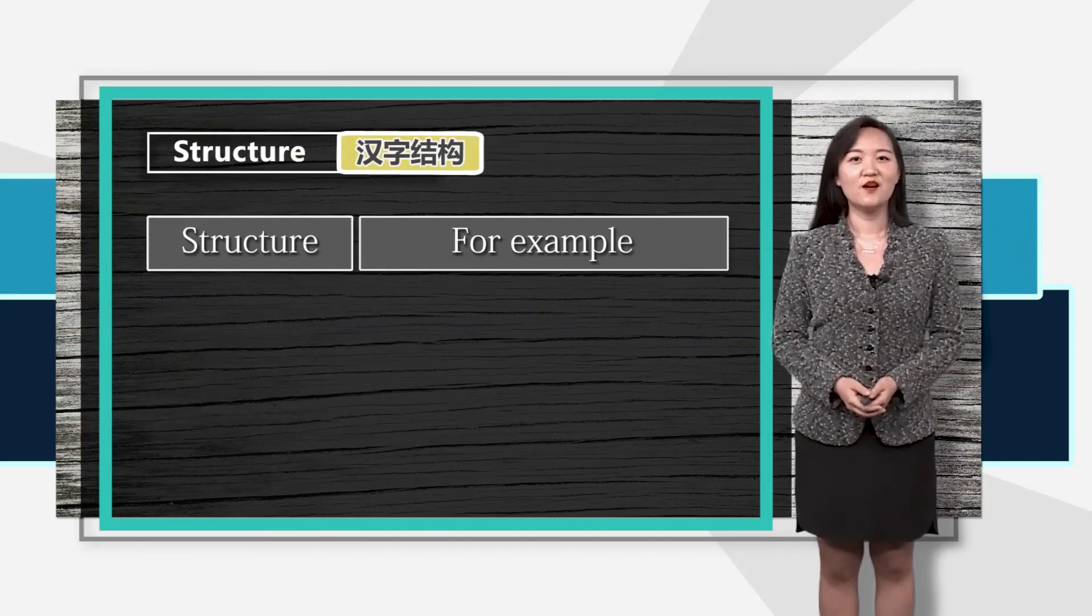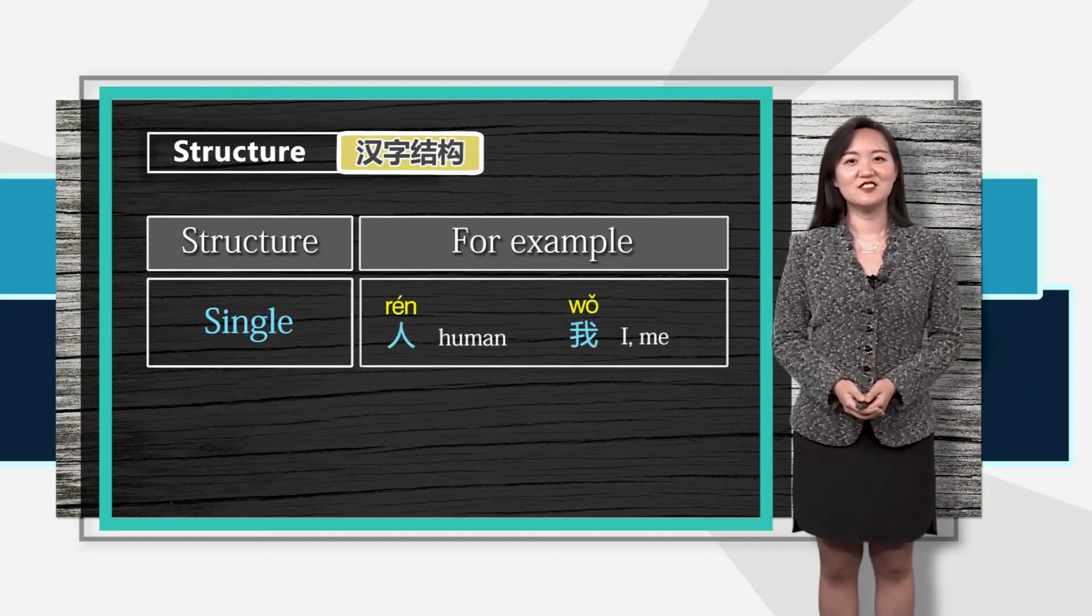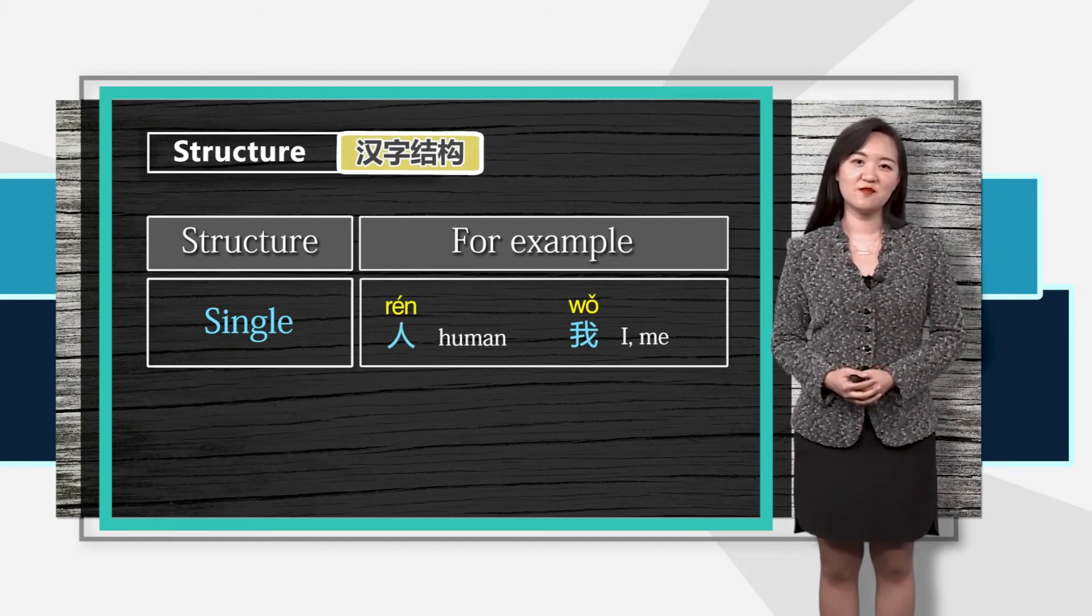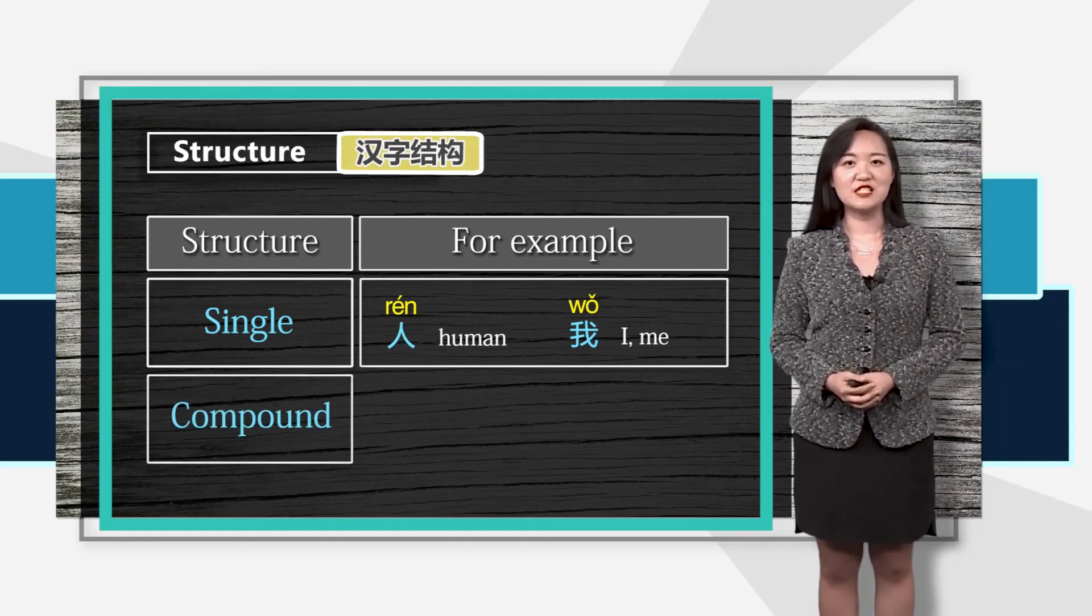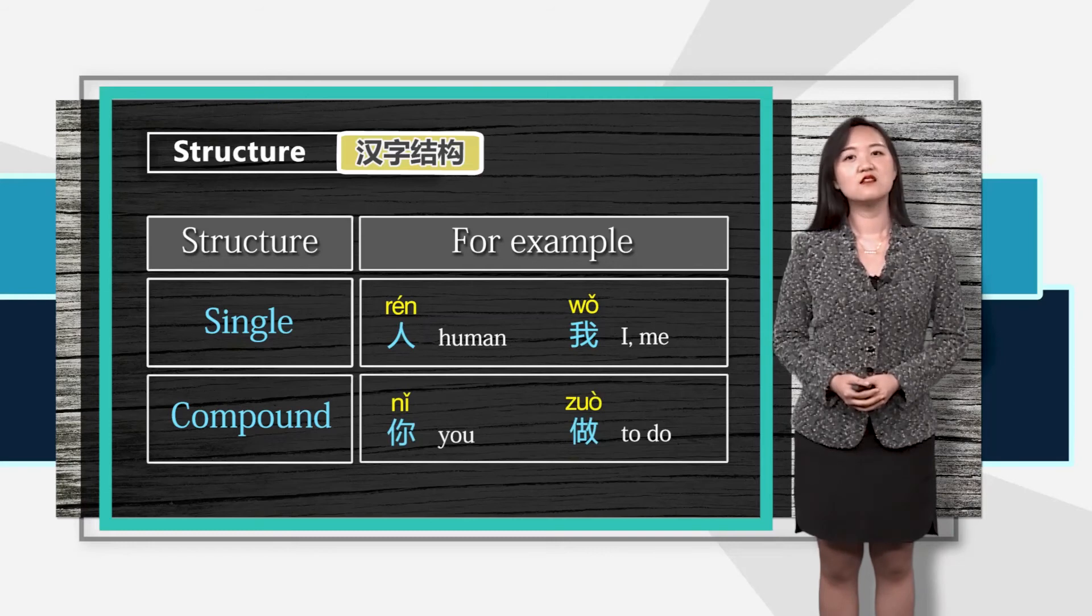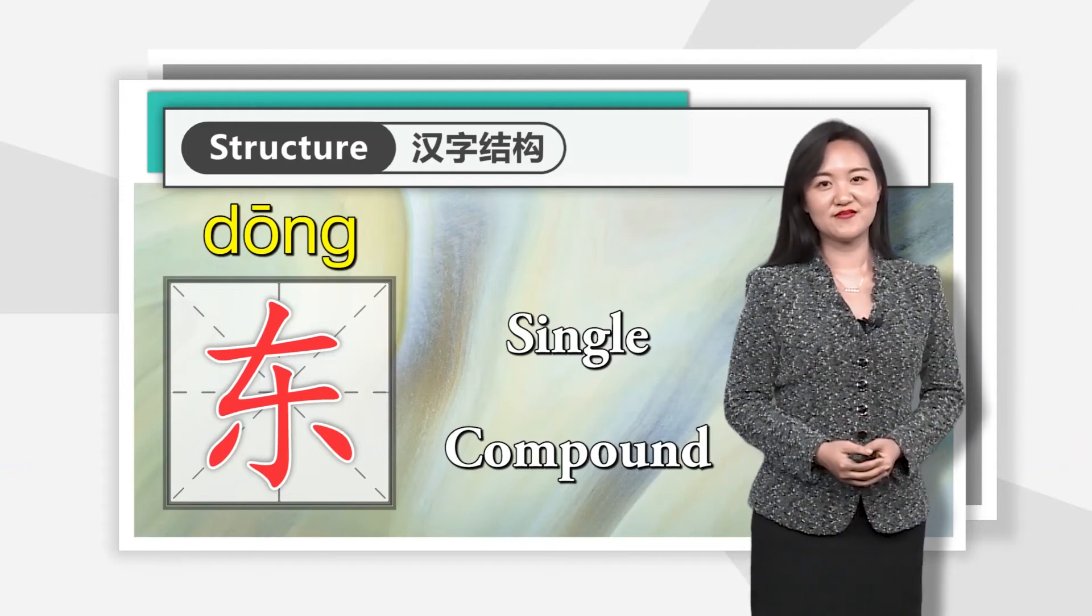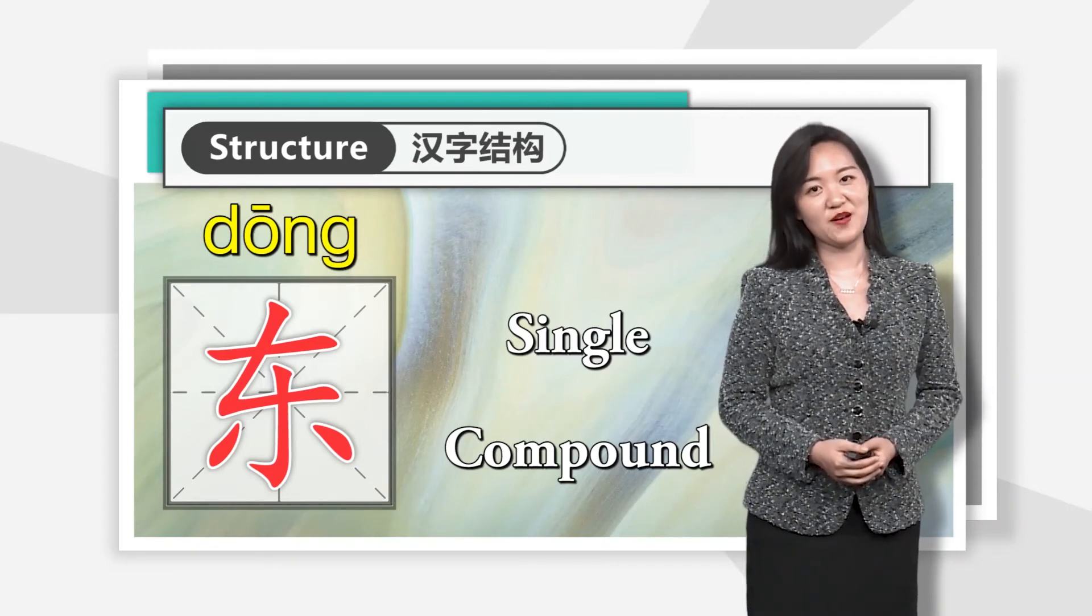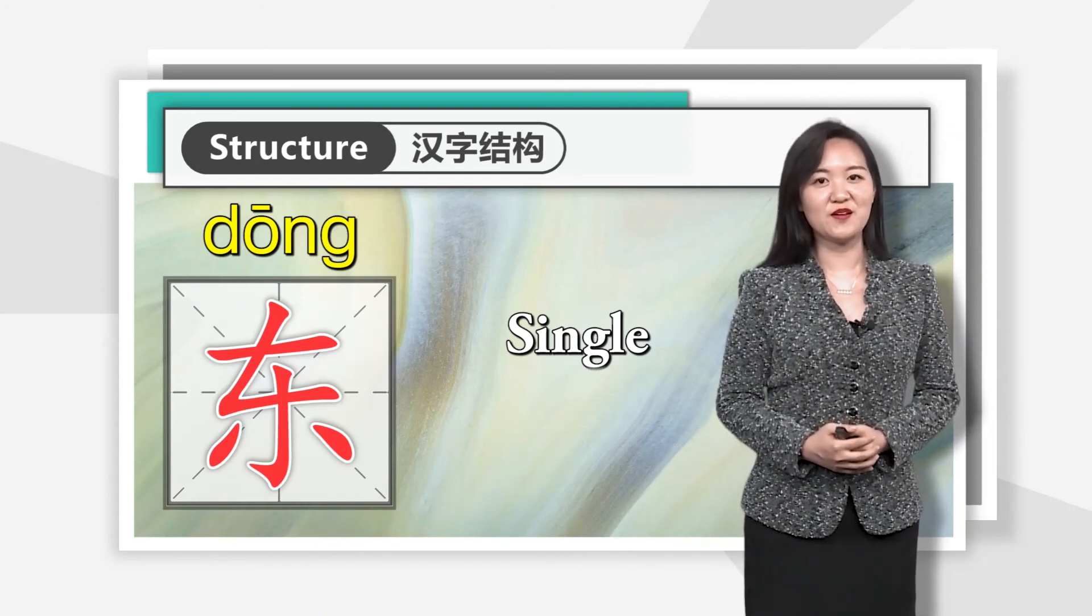So far, all the Chinese characters we have learnt are formed by only one part, such as 人 and 我. These kind of characters are called single component structures. There is another type of Chinese character which are formed by two or more parts, for example 你 and 做. They are called compound structure. Question: Is 东 a single component structure or a compound structure? That's right. 东 is a single component structure character.